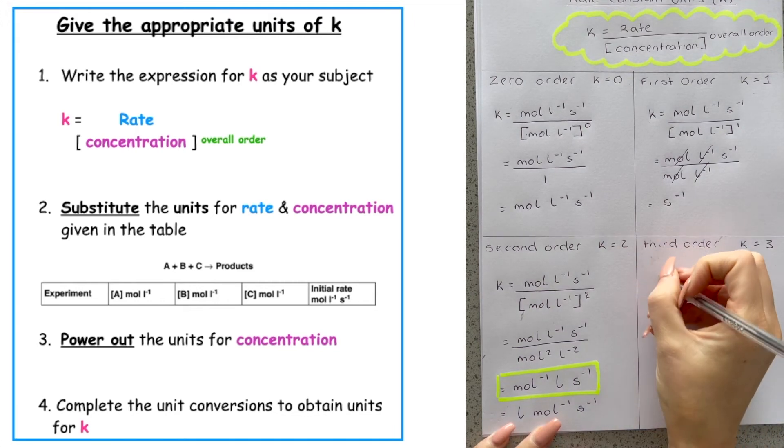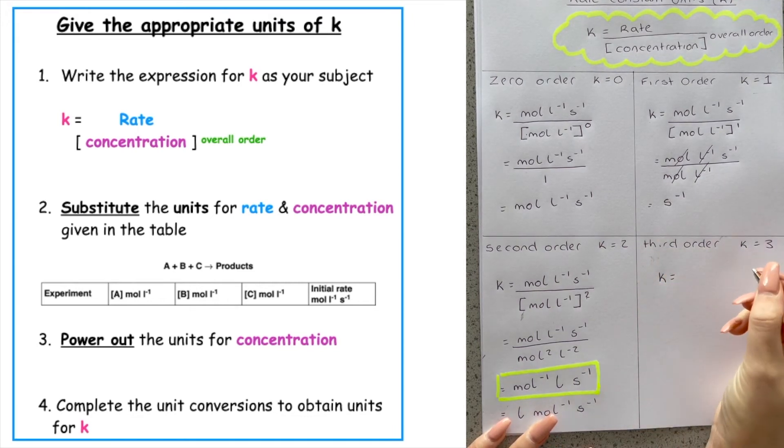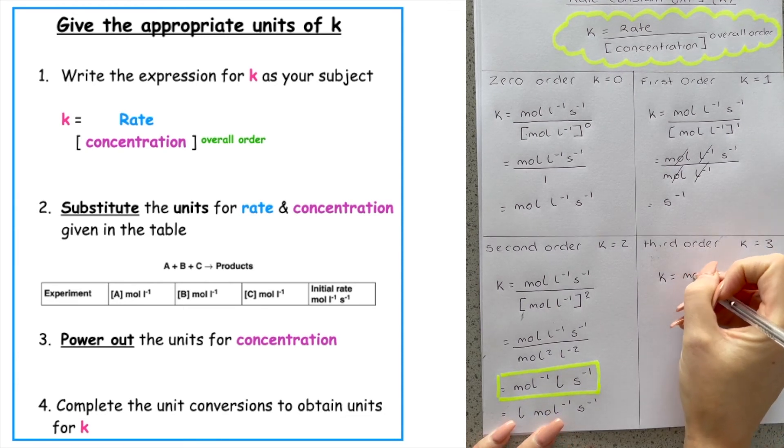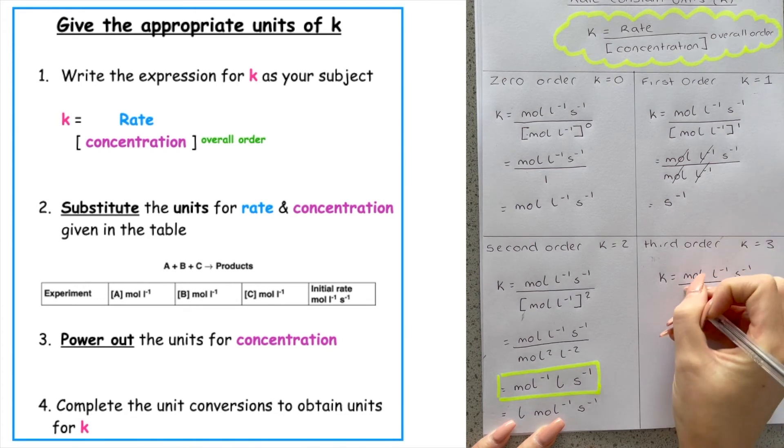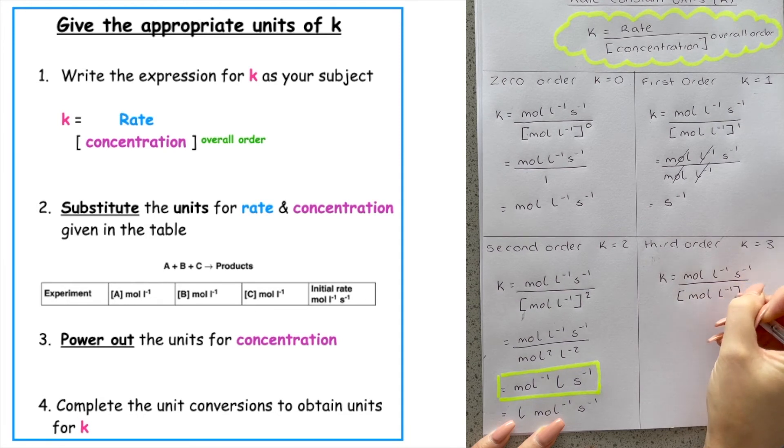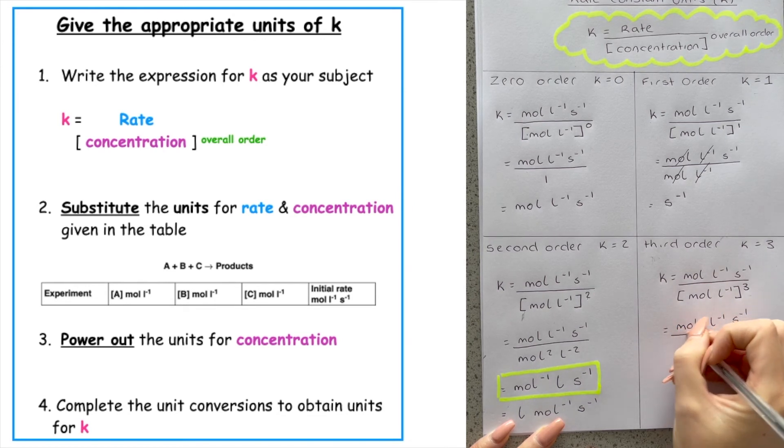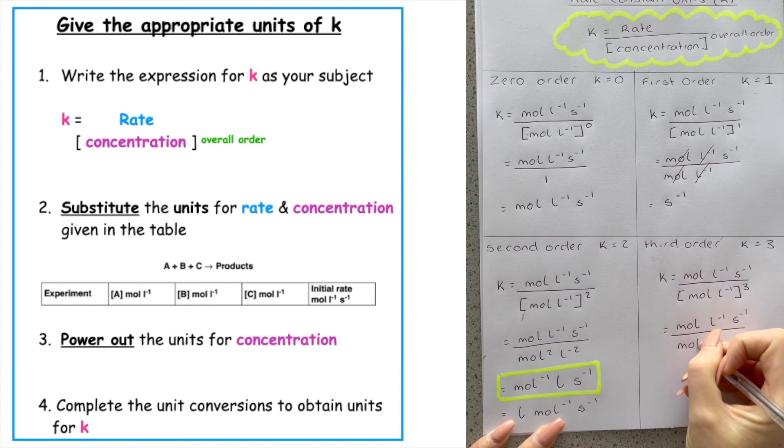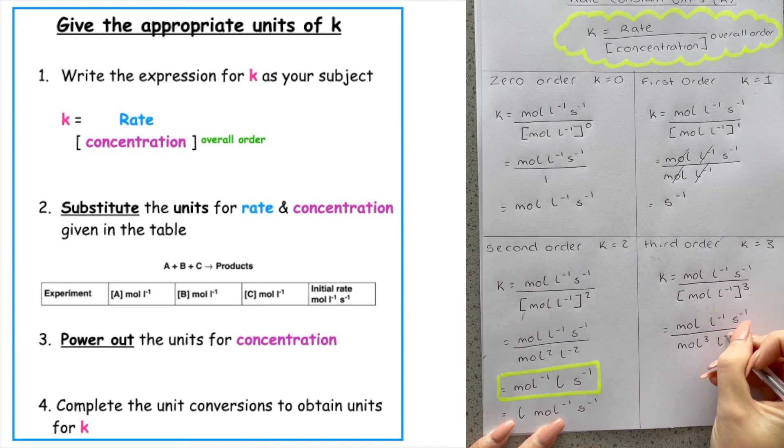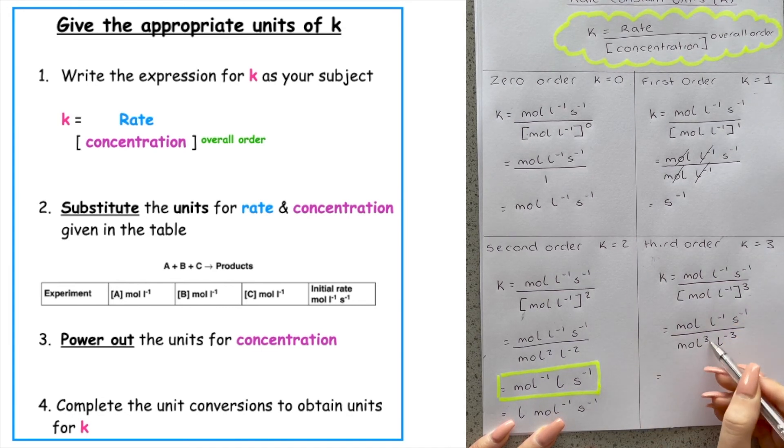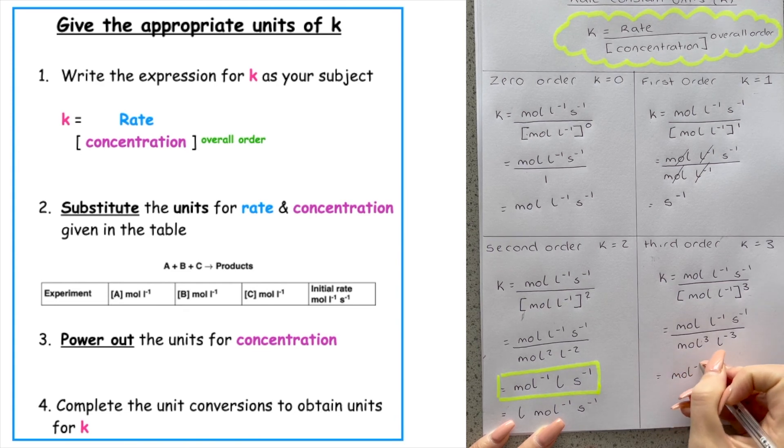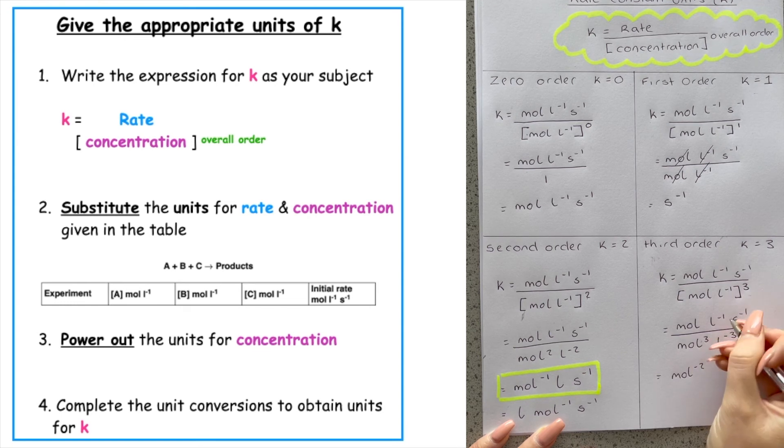And last but not least, we have got k in the overall order of our equation as third order. So we would have mole per litre per second all over the unit of concentration, which is mole per litre to the power of three. Top line remains the same, mole minus one S minus one. I have to cube my mole, so that becomes mole to the three. And cube my L to the minus one, which becomes L to the minus three. If it's positive three in the bottom, it becomes negative three when it comes to the top. One minus three gives me mole to the minus two. L negative three, when I flip it, will become positive three. Minus one plus three comes L to the two. S to the minus one.